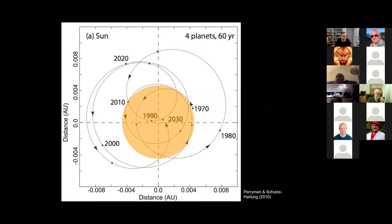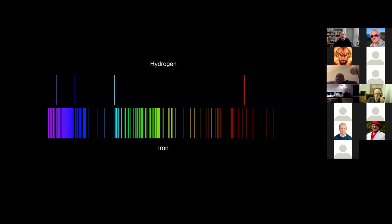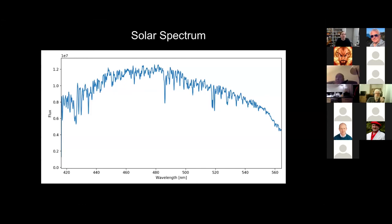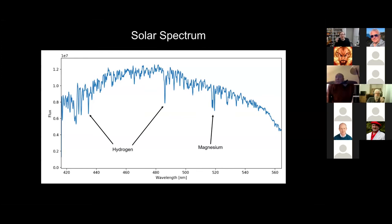We can measure this wobble in another way by taking advantage of the fact that atoms and molecules have very specific wavelengths at which they like to emit light. Here at the top is a hydrogen spectrum, here at the bottom is an iron spectrum — very, very characteristic wavelengths. If you look at the spectrum of the Sun, you can see all these absorption lines from different atoms and molecules — these two lines are hydrogen, this one here is magnesium. These are very, very stable lines, so if the star is moving, these lines will shift a little bit in wavelength, either redshifted or blueshifted.